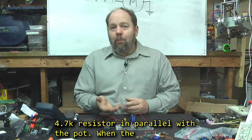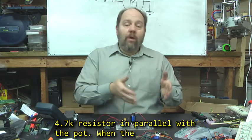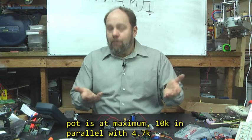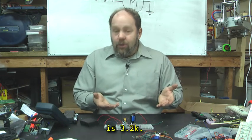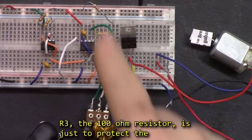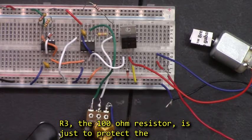When the pot is at maximum, 10K in parallel with 4.7K is 3.2K. R3, the 100 ohm resistor, is just to protect the chip.